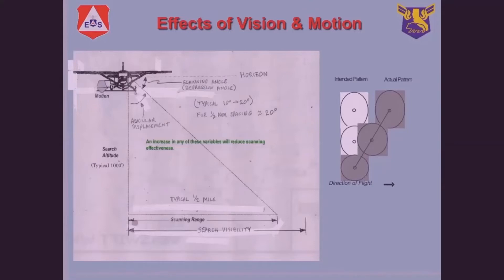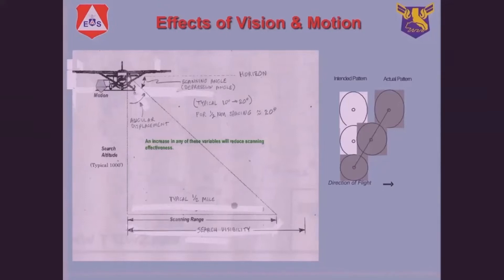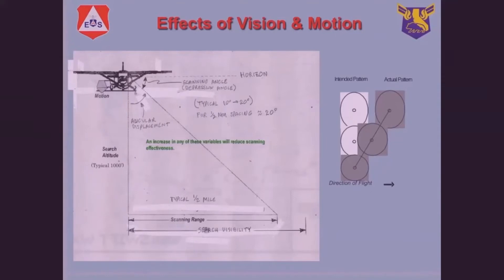Search visibility is the farthest distance you could expect to see whatever objective you're looking for at the search altitude in a moving airplane. We want our scanning range to be less than our search visibility — there's no point in scanning way out there if you've already determined you can't see that far. For Civil Air Patrol, the going-in value for scanning range is a half mile — nautical miles. A nautical mile is about 6,000 feet compared to a statute mile's 5,280 feet. So a half nautical mile is 3,000 feet, which makes the scanning angle about 18 degrees — that's why we say 20 degrees.